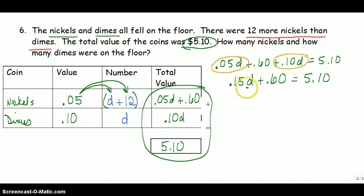While I still need to isolate my variable, which is d, I'm going to subtract .60 from both sides, being careful to make sure those decimal places are lined up. So now I have .15d is equal to $4.50.